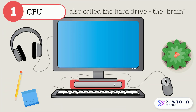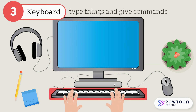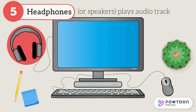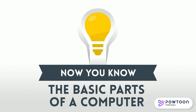We use headphones to listen to an audio source privately and quietly. So let's review: number one is the CPU, the hard drive, known as the brain of the computer. Number two is the monitor, which shows us the programs we have open. Number three is the keyboard, which lets us type things and give the computer commands. Number four is the mouse — it moves your cursor and lets you select things. And last is headphones or speakers, which play the audio tracks on your computer. And now you know all the basic parts of a computer!